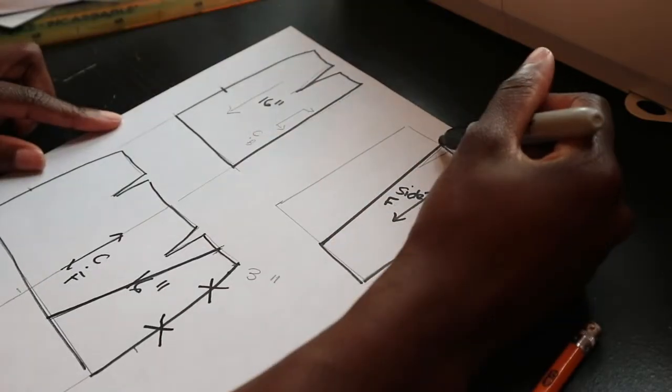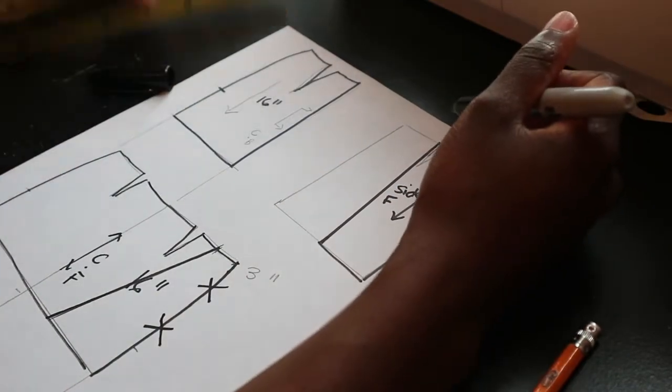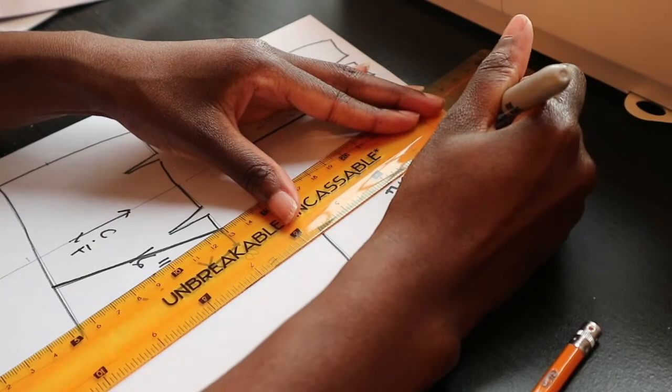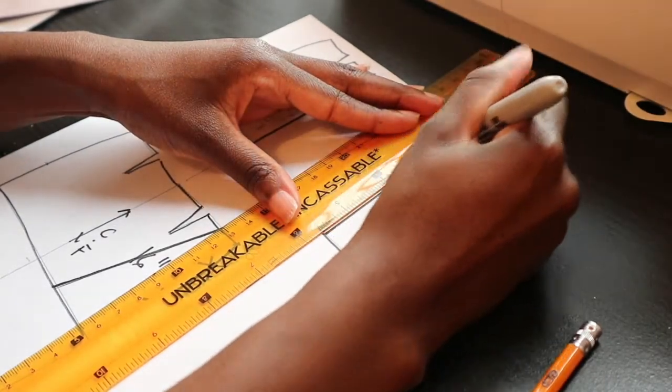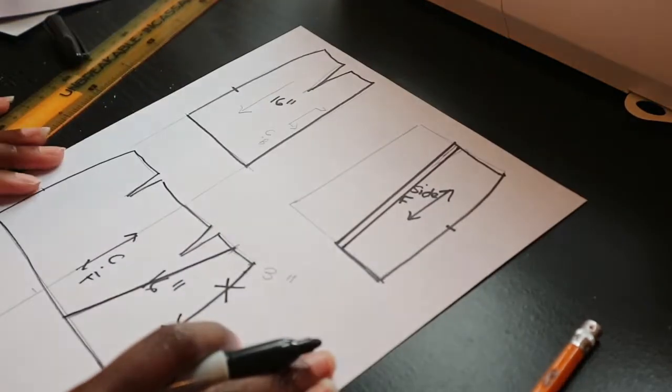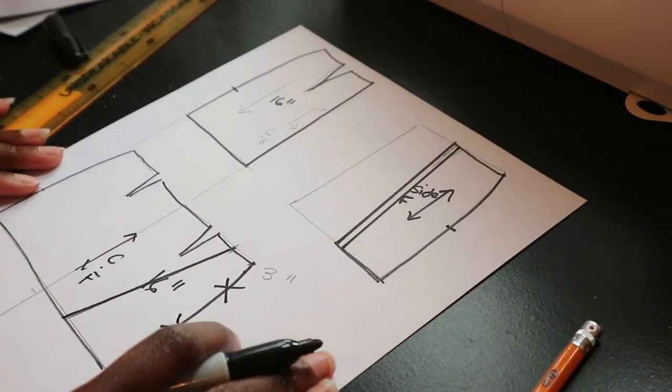You also want to make sure that you go around and include seam allowances. You want to include hem and seam allowance around all your pattern pieces.